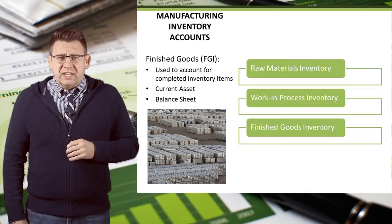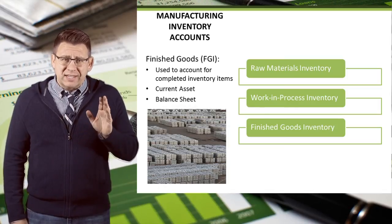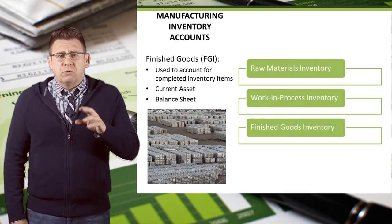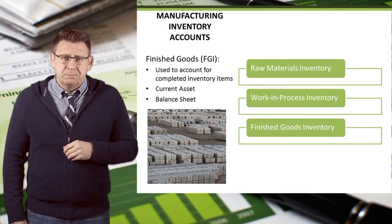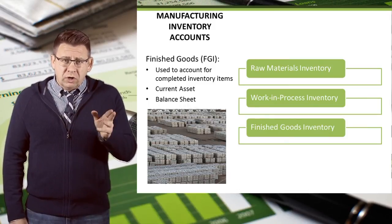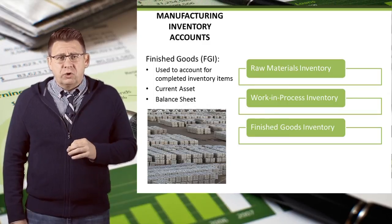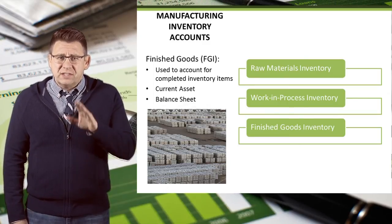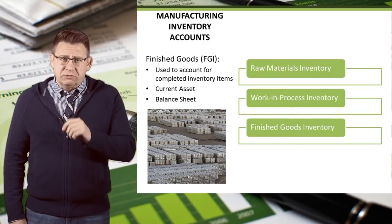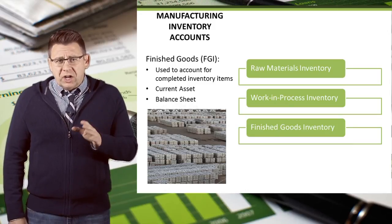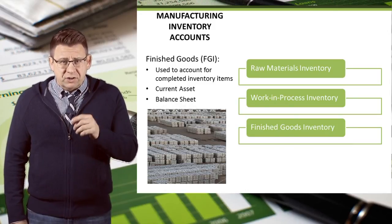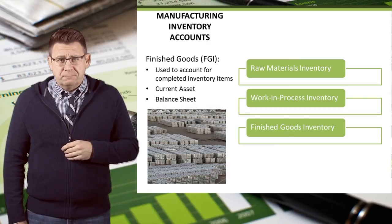The finished goods inventory account, sometimes abbreviated as FGI, is used to account for completed inventory items. When you learned about accounting for inventory in your financial accounting course, this is the account you were using. FGI is an inventory account, which makes it a current asset found on the balance sheet.